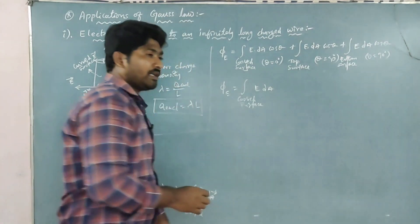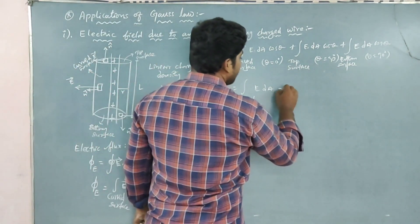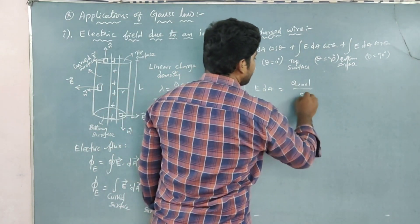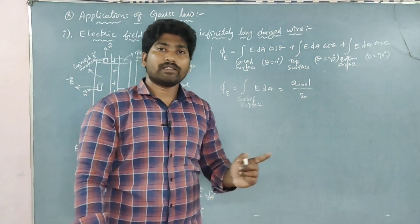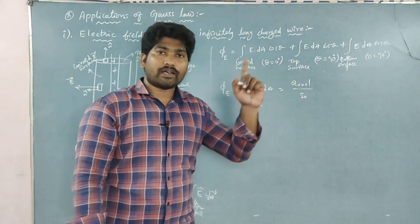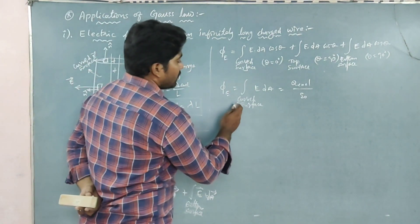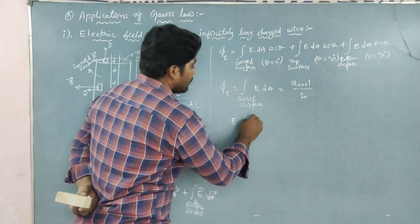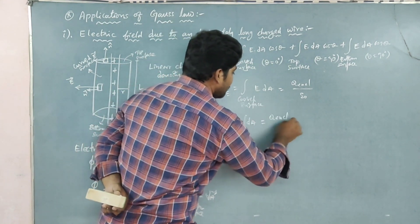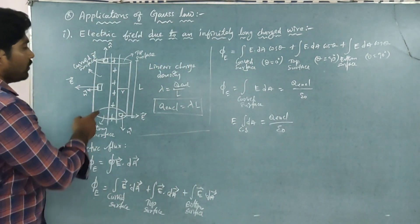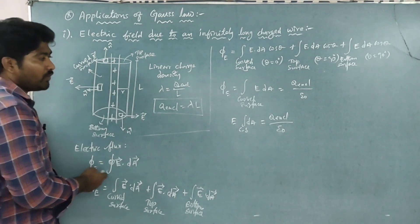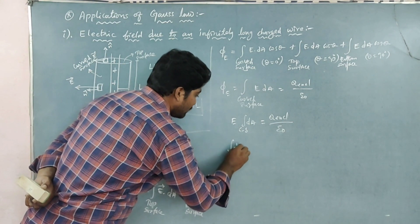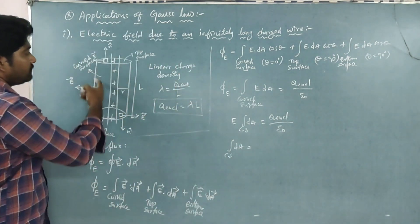Applying Gauss's Law, the electric flux phi E equals Q enclosed divided by epsilon naught. So the integral over the curved surface of E dA equals Q enclosed divided by epsilon naught. Here Q enclosed equals lambda times L, the linear charge density multiplied by length. The integral of dA over the curved surface equals the lateral area of the cylinder, which is 2 pi r L.